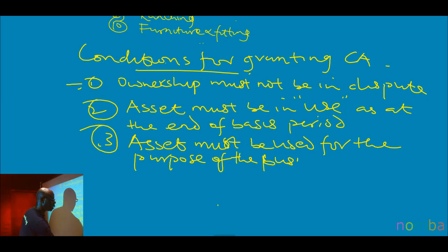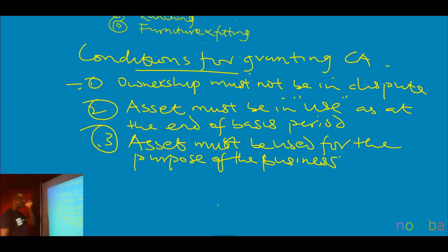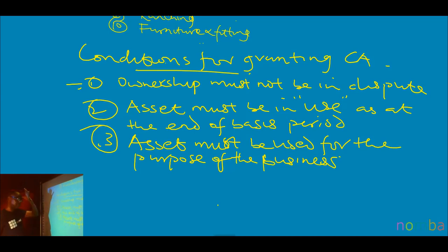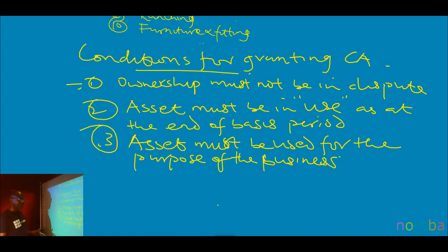Where there is an element of private use, capital allowance will be prorated accordingly. You must use the asset for the business. For example, I have four vehicles. Three of them I use to move my products to the market. The fourth one I use as a private car at home. For the purpose of capital allowance, it is only those three used for the purpose of the business that will be granted capital allowance.